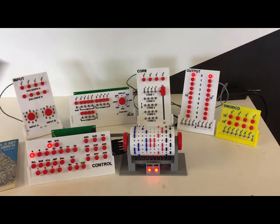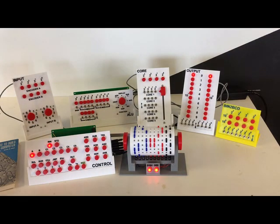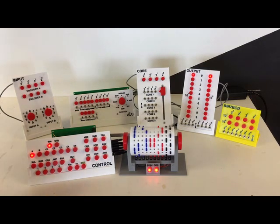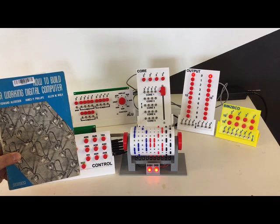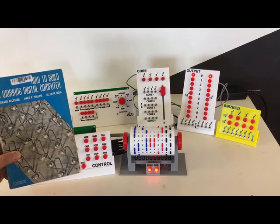Hi, this is WDC version 1, an implementation of a computer described in the book How to Build a Working Digital Computer by Edward Alicoster, James P. Phillips, and Alan M. Wack, published in 1967.